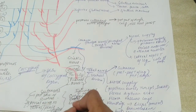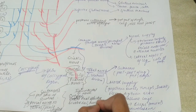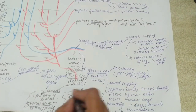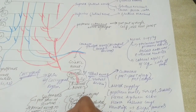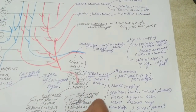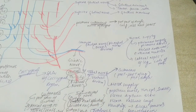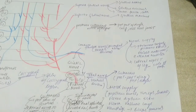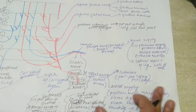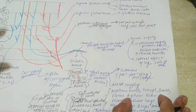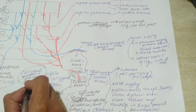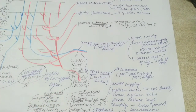The pudendal nerve also supplies the levator ani muscle and skeletal muscles around the perineum, including the external urethral sphincter. To summarize: the anterior scrotal skin was supplied by the lumbar plexus, while the dorsal nerve to the clitoris, penis, and vagina come from the pudendal nerve. S4 and coccygeal 1 form the coccygeal plexus supplying the ischiococcygeus muscle.